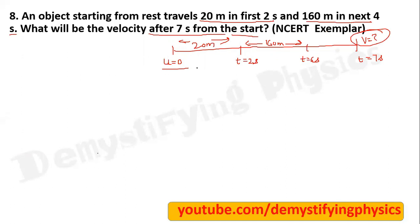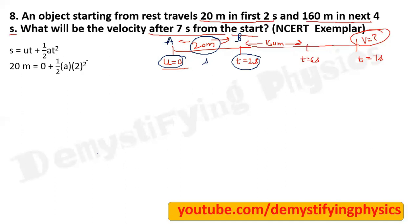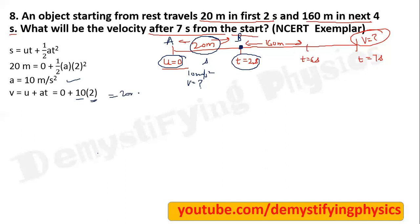If you don't understand what to do, think about what information you have been given and what you can find. For A to B part: u is known, time is 2 seconds, distance is 20 meter. From s equals ut plus half a t squared you can find acceleration. Use the second equation of motion and we can find a equals 10 meter per second square. We can also find velocity — after 2 seconds, using v equals u plus at, with u equal to 0, acceleration 10, and time 2 seconds, the velocity is 20 meter per second.